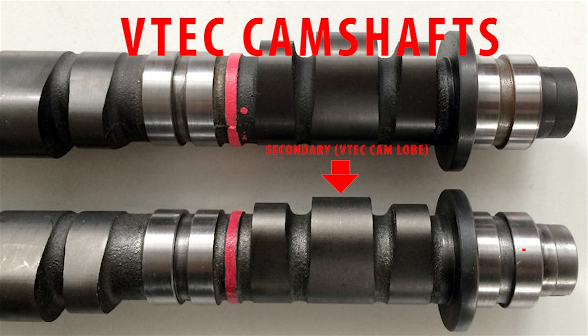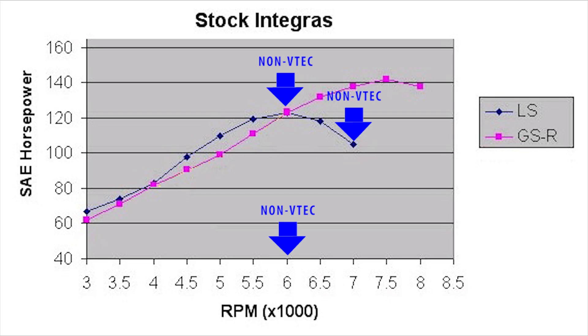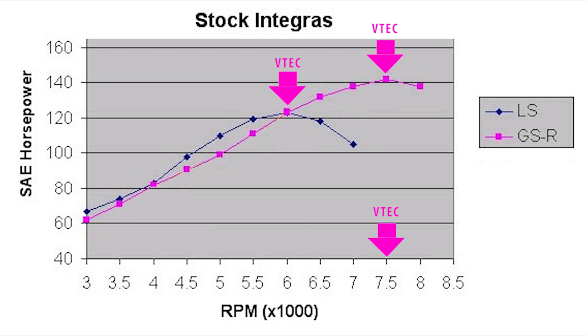Why would you need VTEC? A typical comparable non-VTEC engine would lose power in the upper RPMs, as seen on this dyno chart at 6,000 RPM. A similar VTEC version of this engine would transition at the power drop-off point over to the larger cam profile.